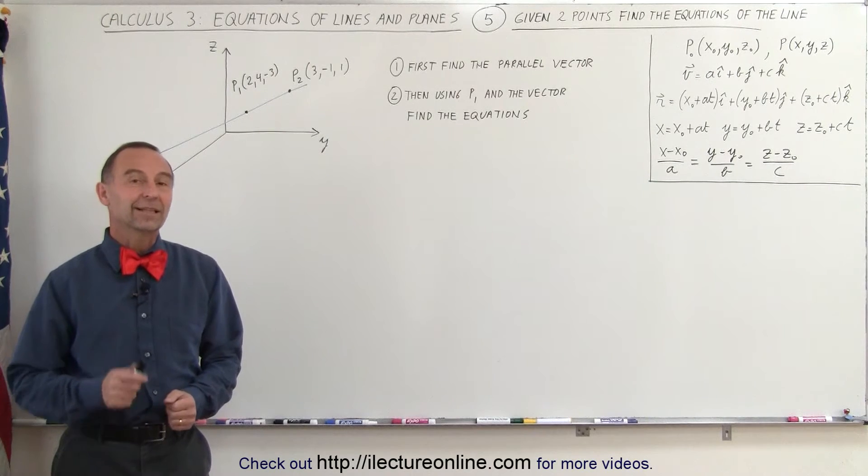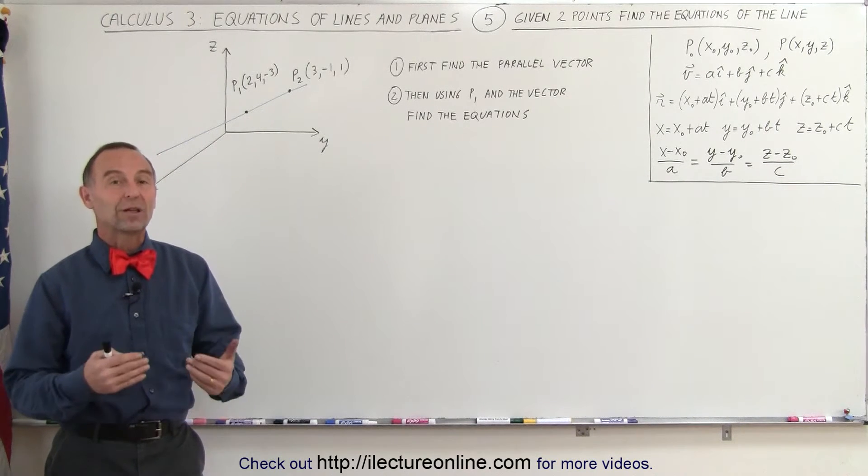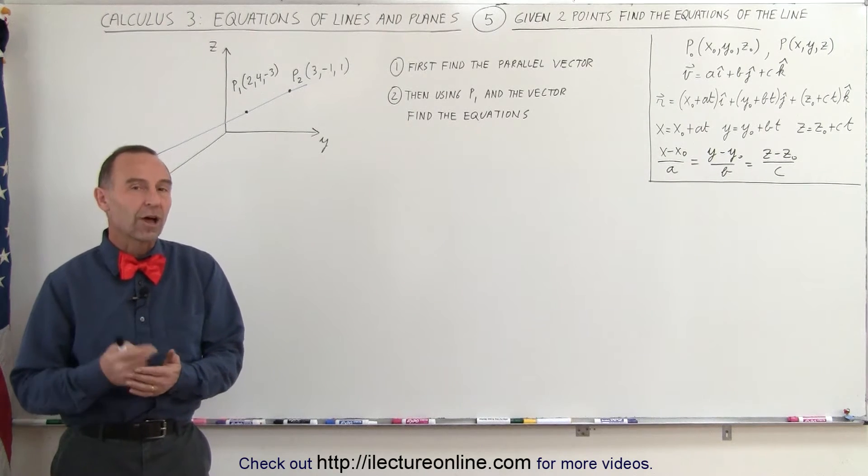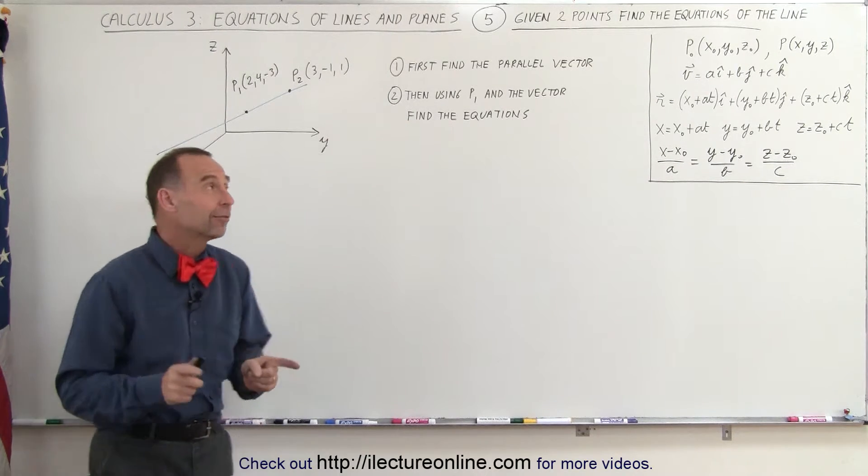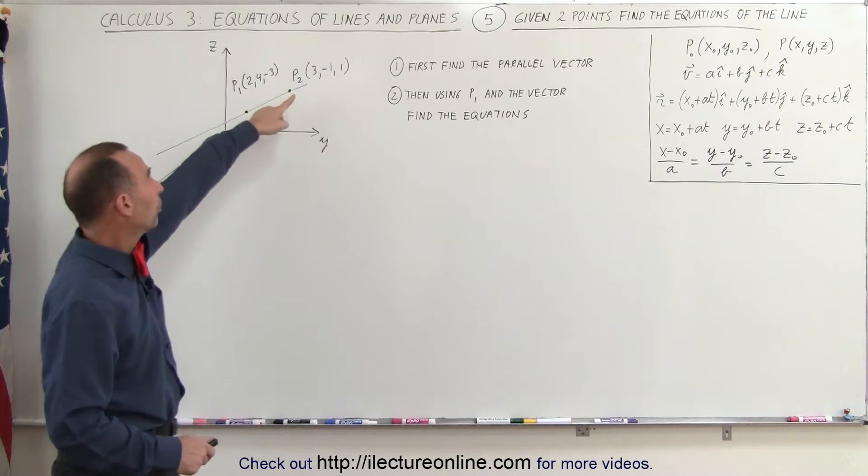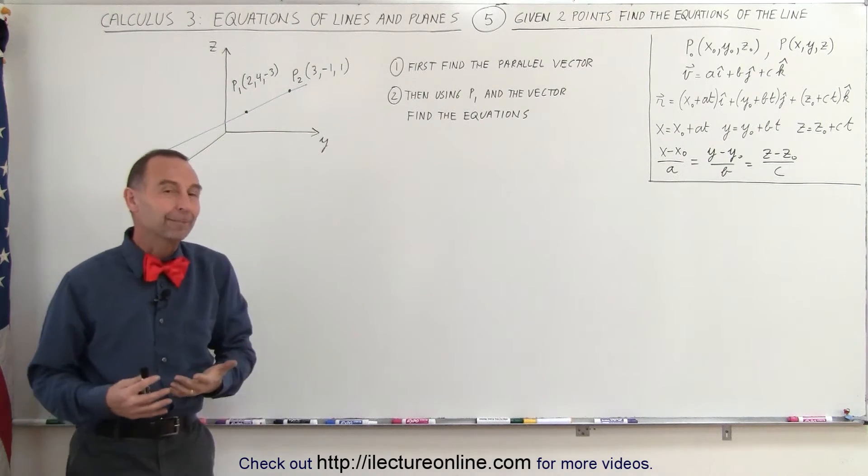Welcome to ElectronLine. In this example, we're going to find the equations of the line, both the parametric equations and the symmetric equations of a line in space when you're only given two points on the line. Here's point 1 and point 2. So how do we do that?